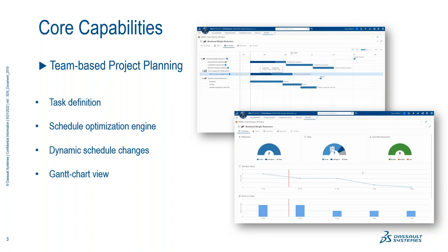It is available with the standard Collaborative Business Innovator role, but you get more functionality if you also have Collaborative Industry Innovator — that allows you to actually attach data being managed in the cloud to particular tasks. It can keep everyone connected and helps with resource planning. Everyone gets an accelerated view of the projects they're working on. The Gantt chart view will show you a project timeline — building a milestone, attaching dependencies, and how those move when you change due dates of certain milestones. We'll also review the summary dashboard showing status of tasks, percentage progress, and what's been completed.